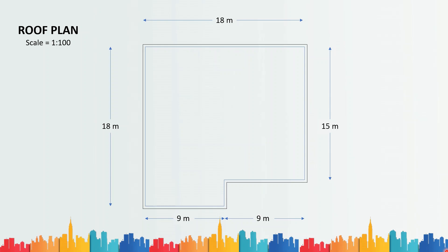As you can see, I have now added the thickness of the parapet wall. The thickness can be 150 mm, 230 mm, or 300 mm — whatever thickness you are using should be provided in the roof plan. Thirdly, we have to show the location of the headroom. As you can see, if the staircase is somewhere below, I have provided the headroom here, and I have shown its dimensions.